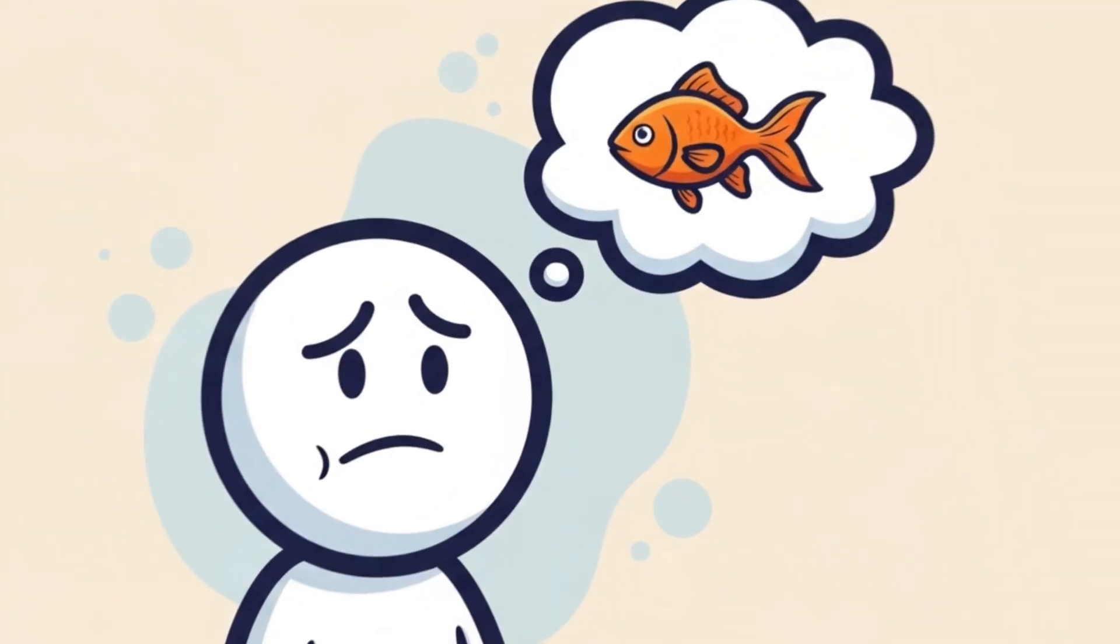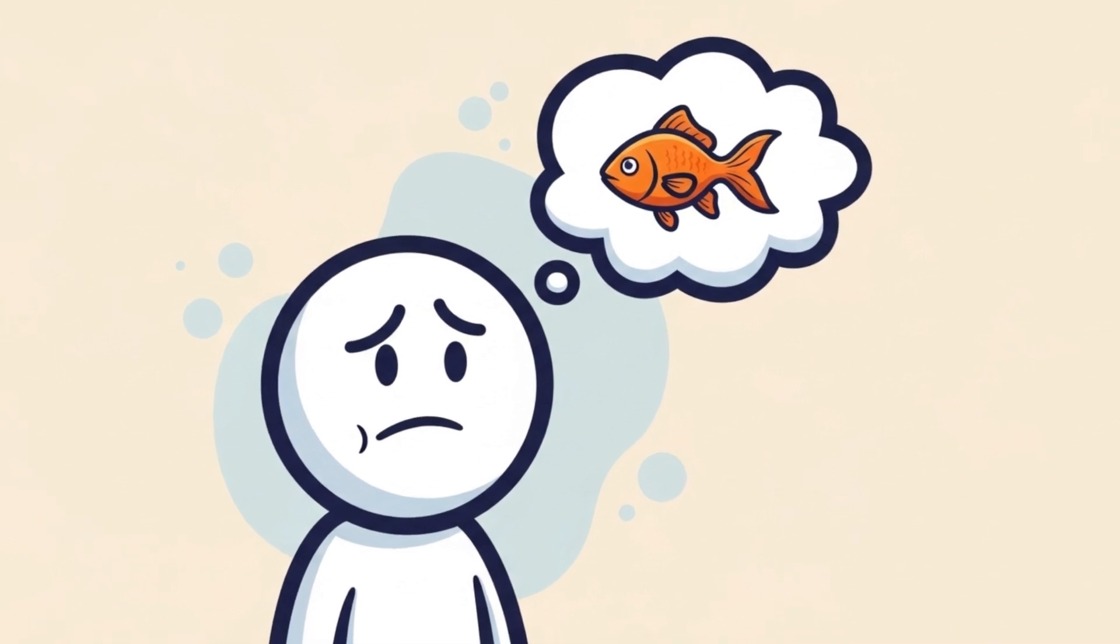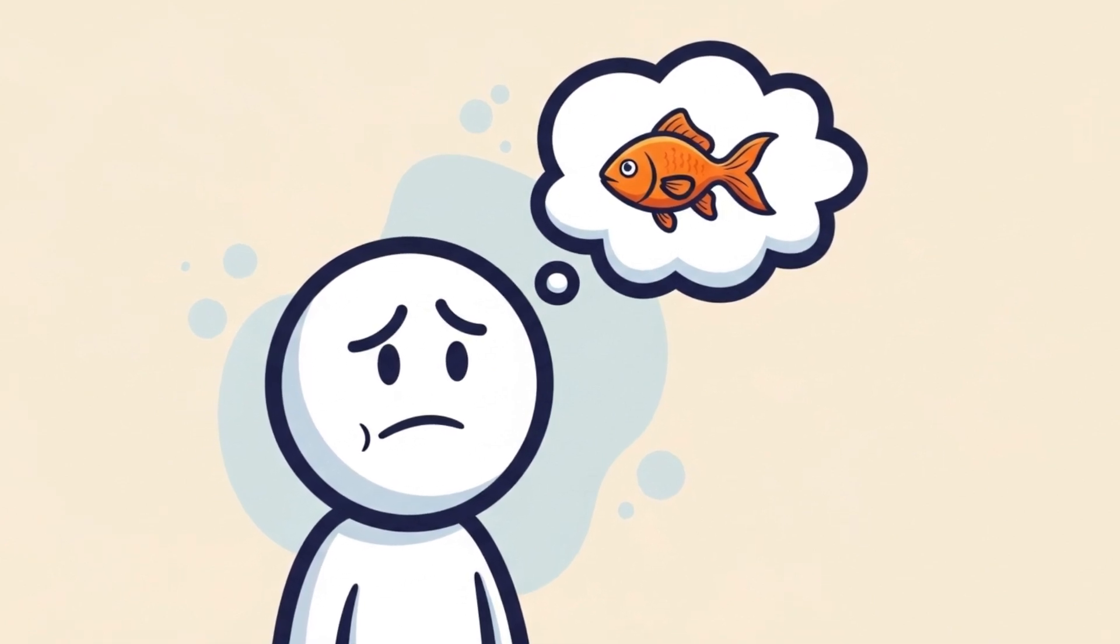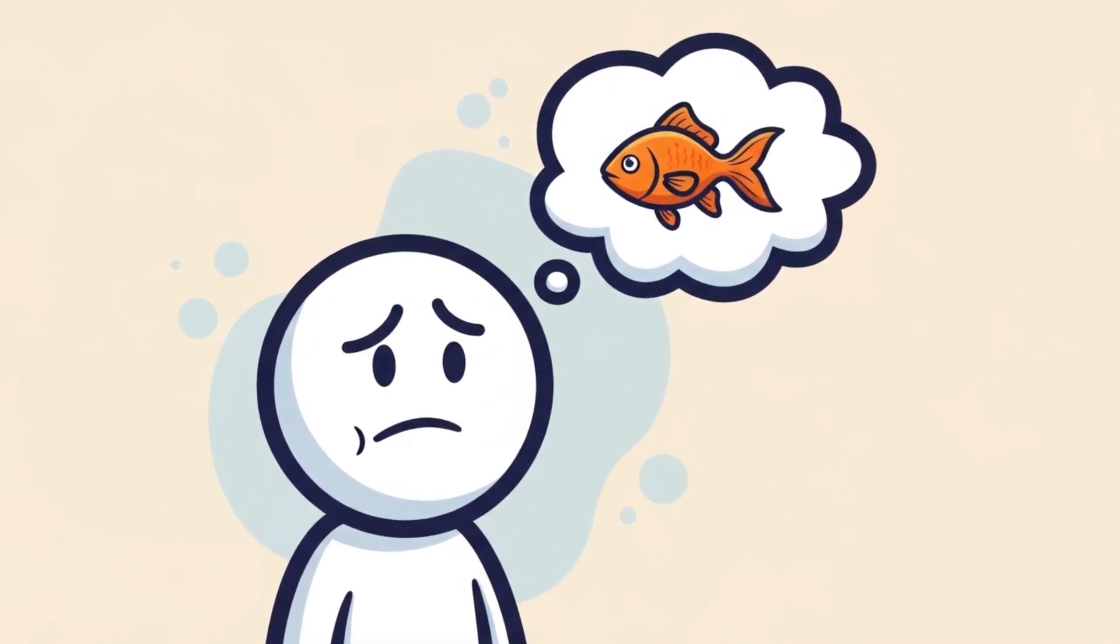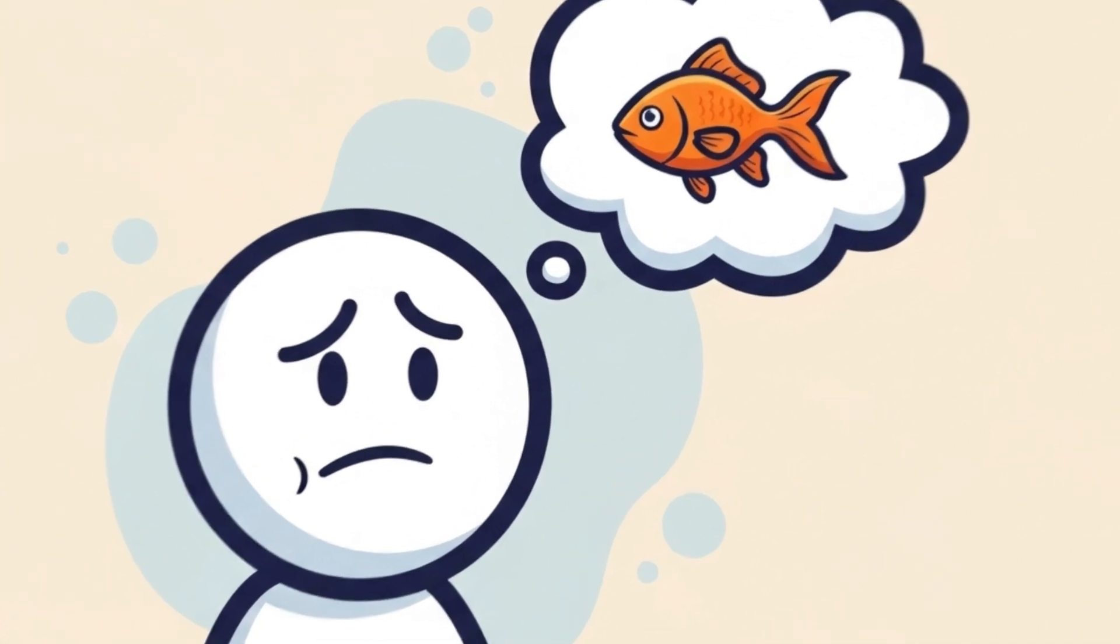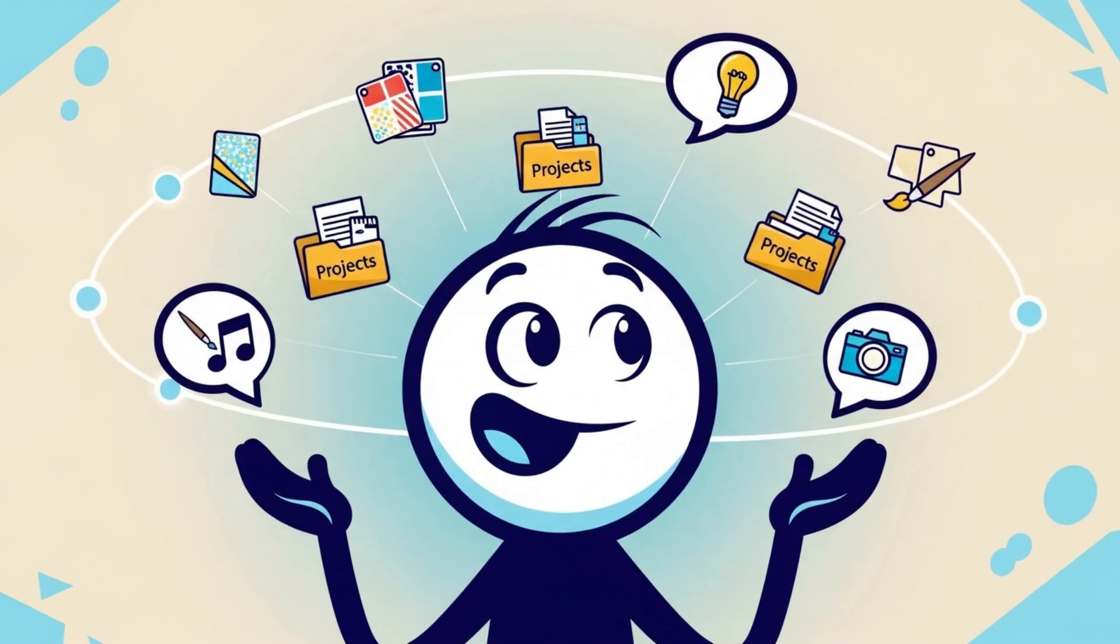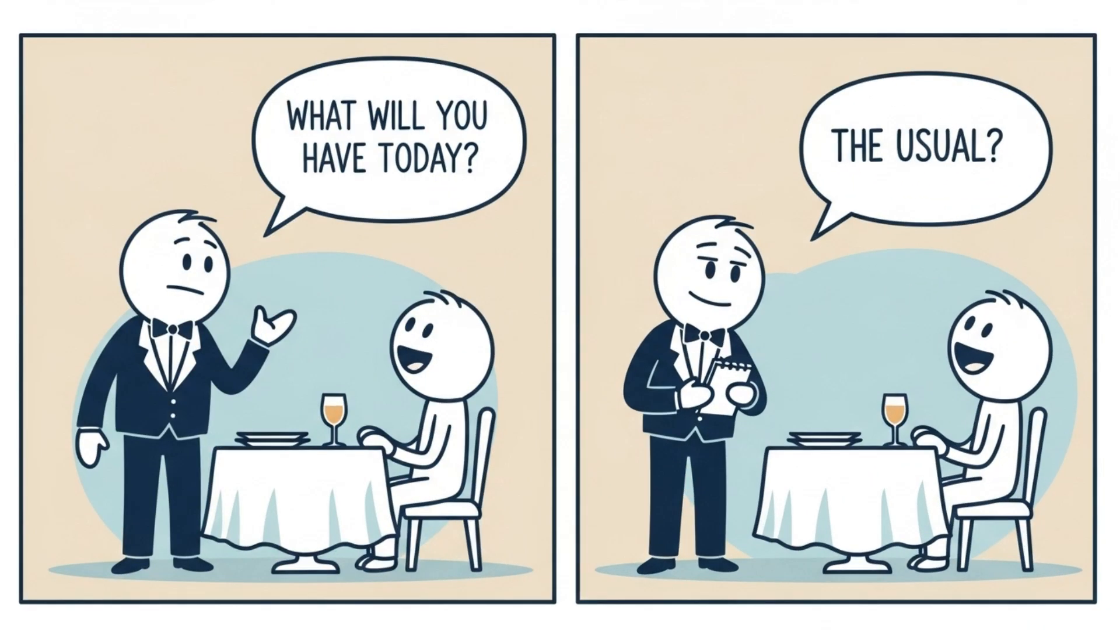In previous versions, ChatGPT had a bit of a goldfish brain. Great in the moment, but it couldn't remember you from one conversation to the next. Now, ChatGPT5 can remember your preferences, your style, even your ongoing projects. Think of it like a digital assistant that actually knows you. It's the difference between meeting a waiter who asks what will you have today, versus one who says your usual.